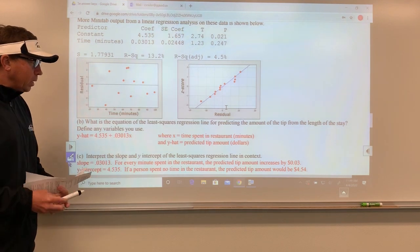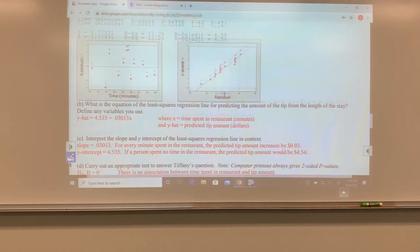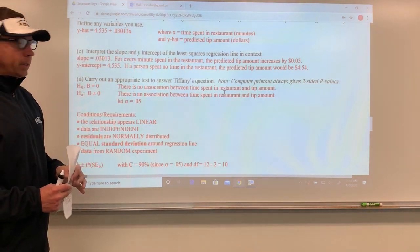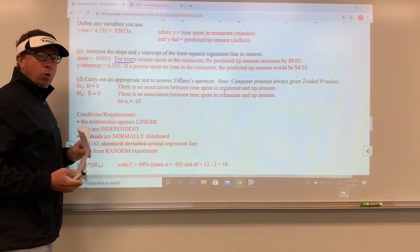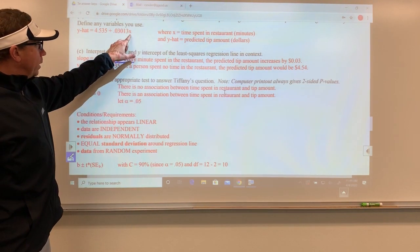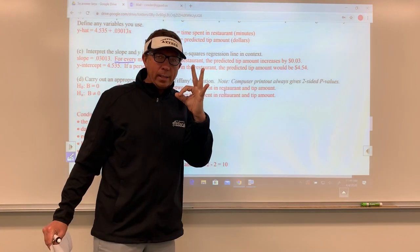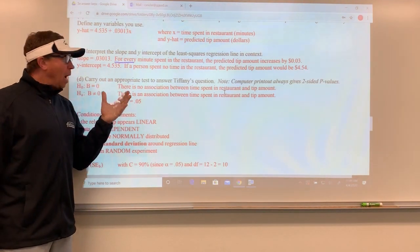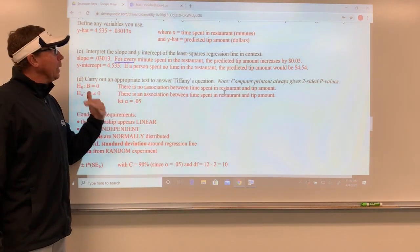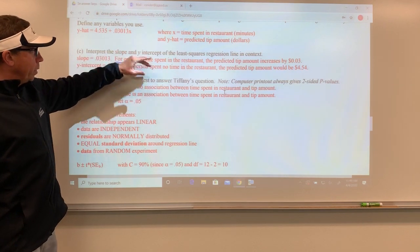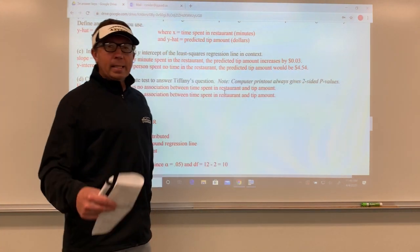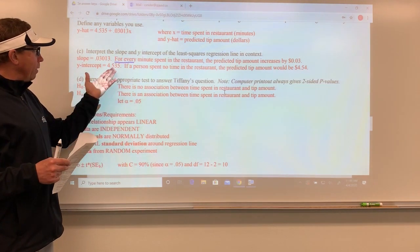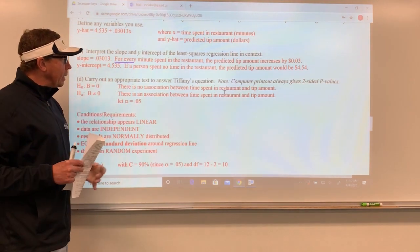Part C asks to interpret the slope and the y-intercept. The slope is about 3 cents. The key thing in interpreting slope and y-intercept is the word 'for every.' For every minute spent in the restaurant, the predicted tip amount will increase by about 3 cents or 0.03 dollars. The y-intercept is probably not realistic. It's almost like the base tip, about $4.54. What it literally means is if you spent no time in the restaurant, zero, the predicted tip amount would be $4.54. Maybe people go to a buffet and do takeout, fill it all up one time and then leave, and maybe they give a tip of about $4.54 on average, so I guess it's actually somewhat realistic.